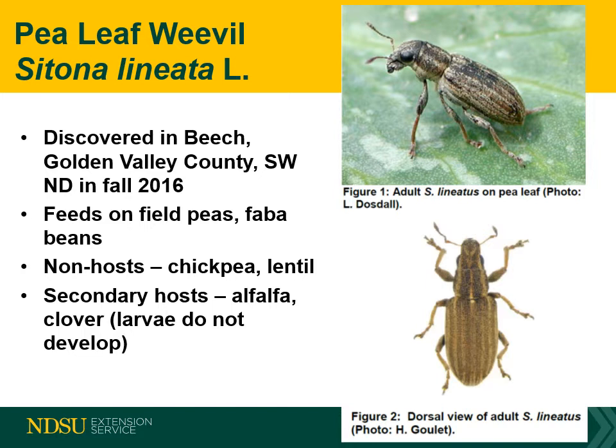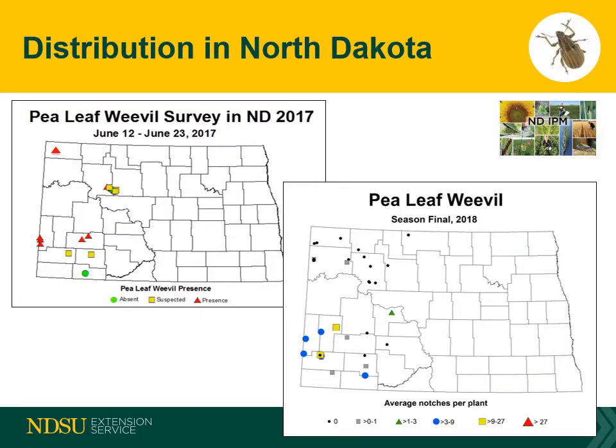Clover and alfalfa serve as secondary hosts but larvae do not develop fully on these crops. Chickpeas and lentils are not known to be a host of pea leaf weevil. The current distribution of pea leaf weevil is in northwestern, north central, and southwestern areas of North Dakota.